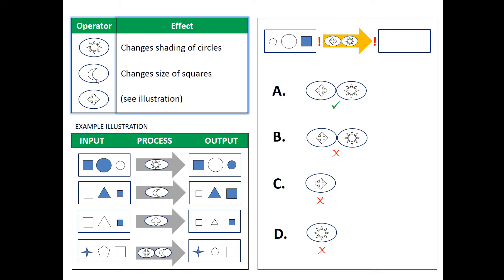This moon shape, or half moon shape, changes size of squares only. So if it's a small square, it makes it bigger, and if it's bigger, it makes it smaller.